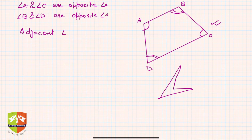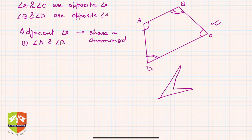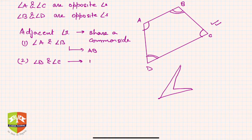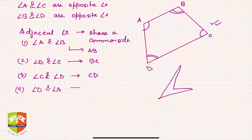There are adjacent angles as well, and you would observe there are four pairs of adjacent angles. Adjacent means they share a common side. Angle A and angle B share common side AB; angle B and angle C share common side BC; angle C and angle D share common side CD; and angle D and angle A share common side AD.